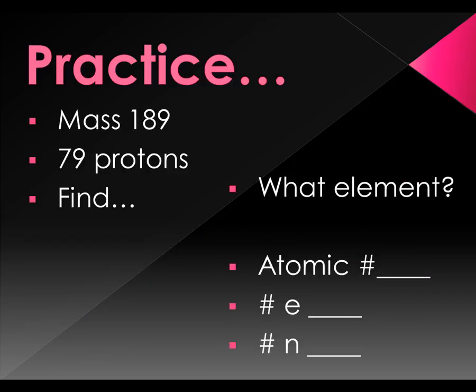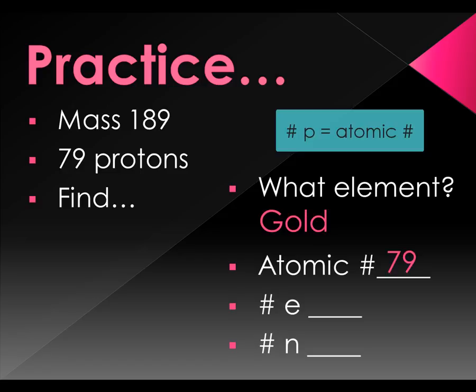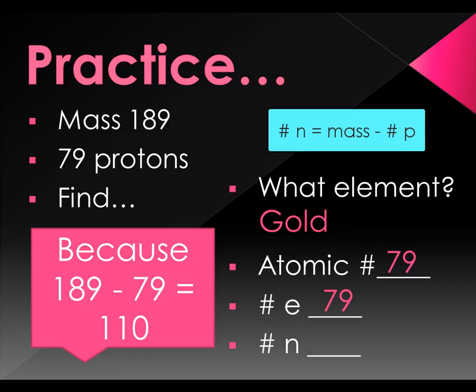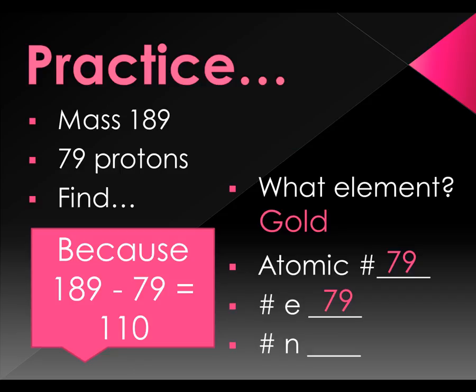I have a mass of 189 and 79 protons. If I know 79 protons, I look at number 79 on the periodic table and find out that is gold. So the atomic number is 79, the number of electrons is 79. To get the neutrons, I'm going to subtract. 189 mass minus 79 is 110 neutrons.